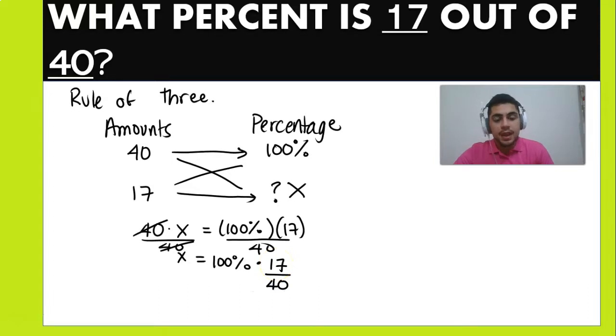And when we do that, that amount is going to be 42.5 percent. Remember, don't forget the percentage. So that is how you can do it. You can either use the rule of three or the percentage formula.